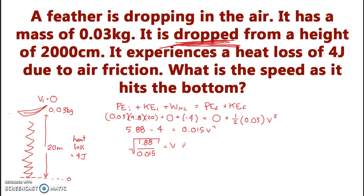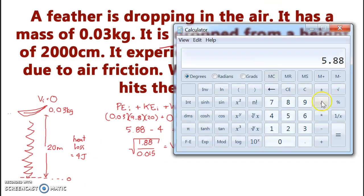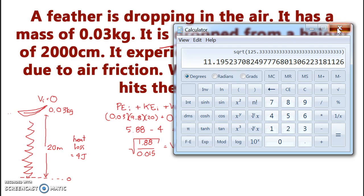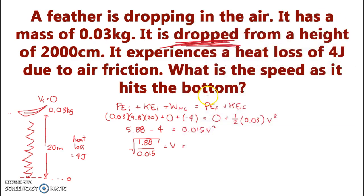And what is that equal to? Let's find out. Calculator time. There's no way I can do this on my own. 1.88 divided by 0.015 equals, okay, square rooted 11.19. Put that down here. That is equal to 11.9 meters per second. Let's find out what we got. Uh-oh. Oh, one significant digit. This is horrifying. So this is equal to 12, which is actually, I only have one significant digit. It's 1 times 10 to the 1 meters per second.